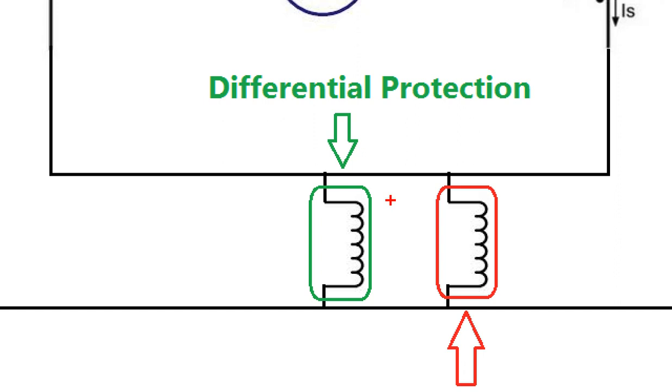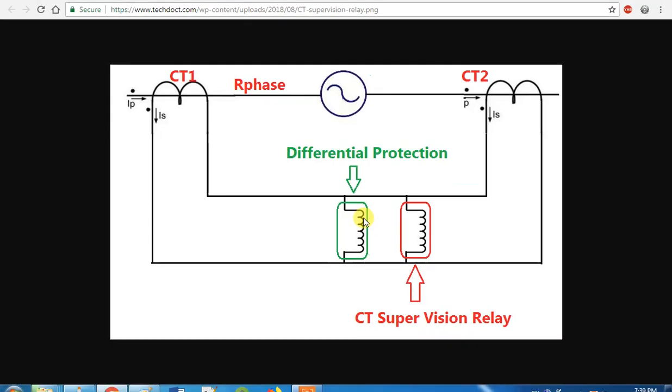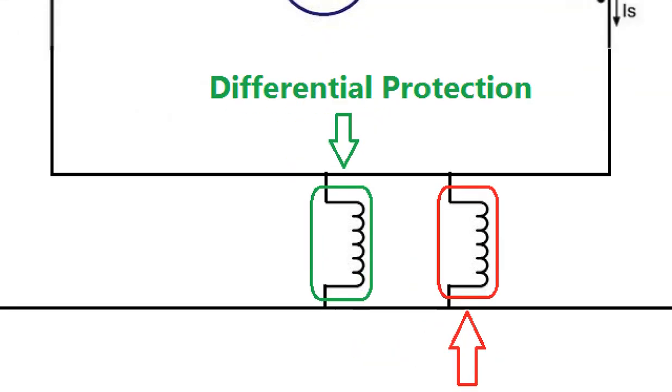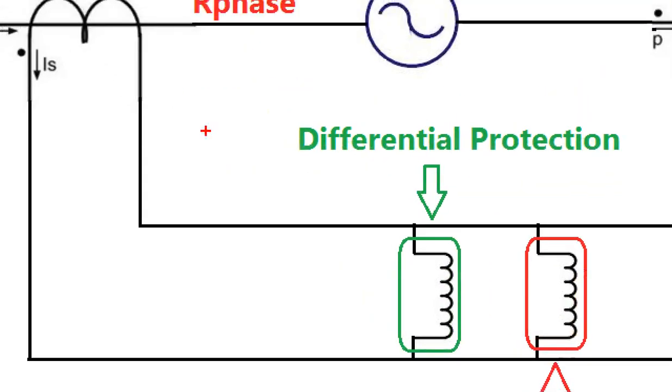We need to improve the stabilizing resistance. But we need to calculate the stability resistance. So if there is a fault current, it's 10kA. That CT is saturated. So how did we calculate the stabilizing resistor and install the stabilizing resistor?